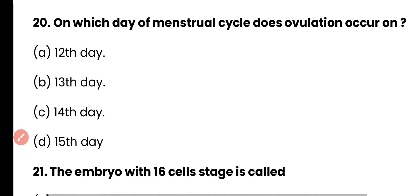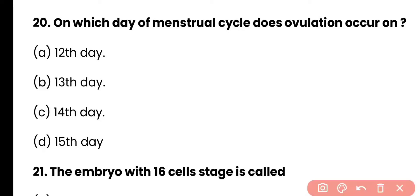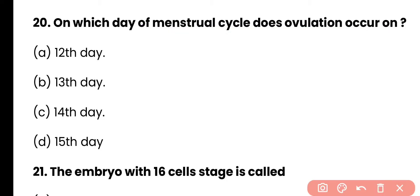Question 20: On which day of the menstrual cycle does ovulation occur? 12th day, 13th day, 14th day, or 15th day? Correct answer is option C. Ovulation occurs on the 14th day of the menstrual cycle.